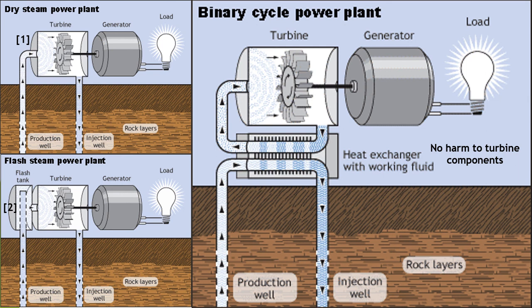The third type is the binary cycle power plant. In this system, heat from geothermal fluids causes a secondary liquid to vaporize, which is subsequently used to turn a turbine, and the turbine produces electricity via a generator.